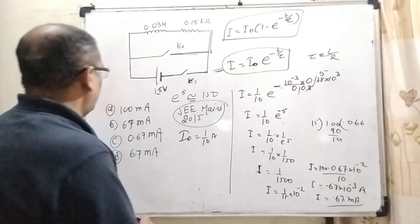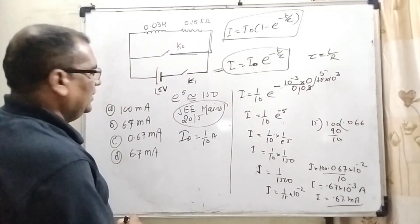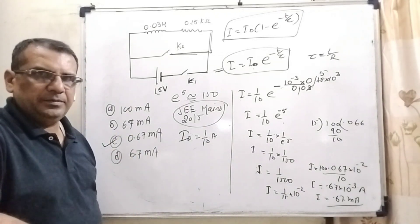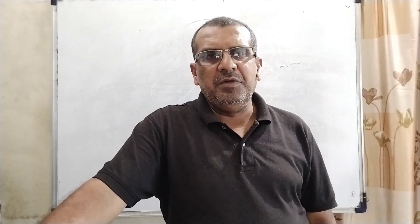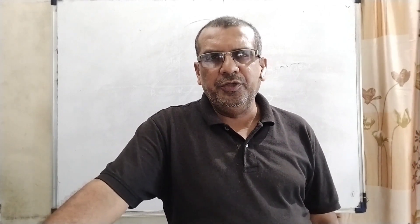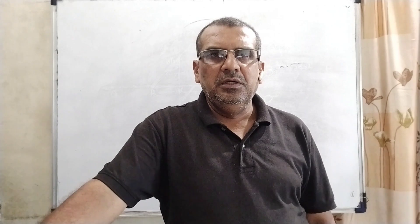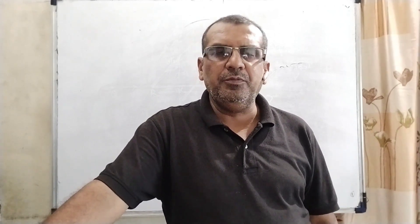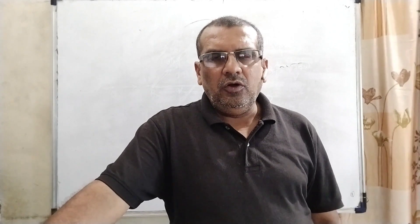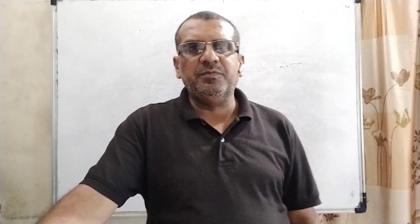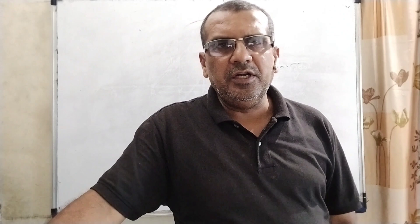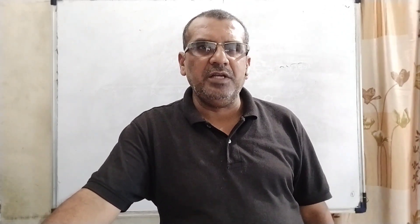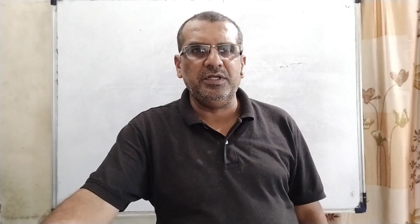So which option is correct here? Option C is correct — 0.67 milliampere. I hope you understood this question. Dear students, if you find something important please note it. If you face any problem, write in the comment box — I will definitely solve it. Please like, share and subscribe my channel. Thank you.